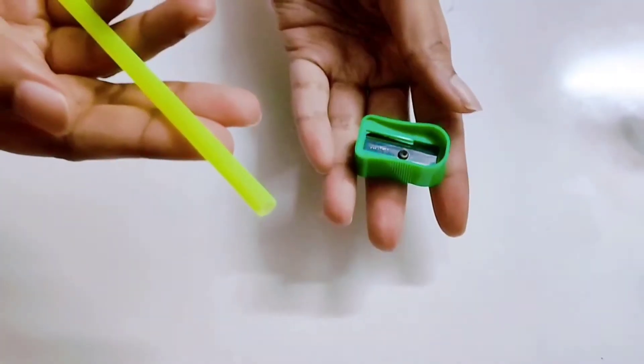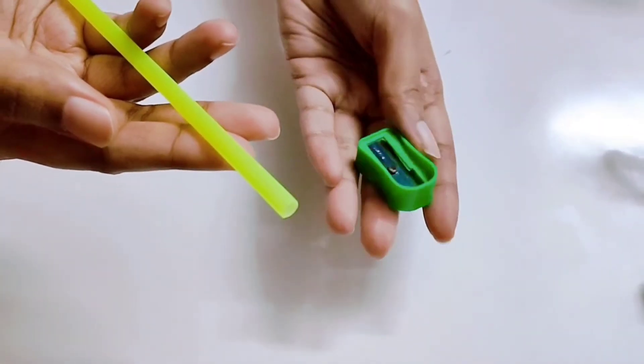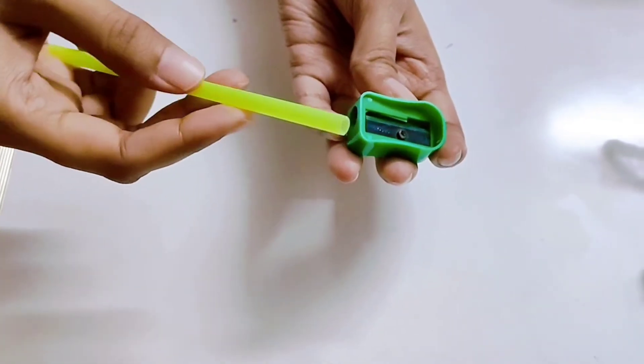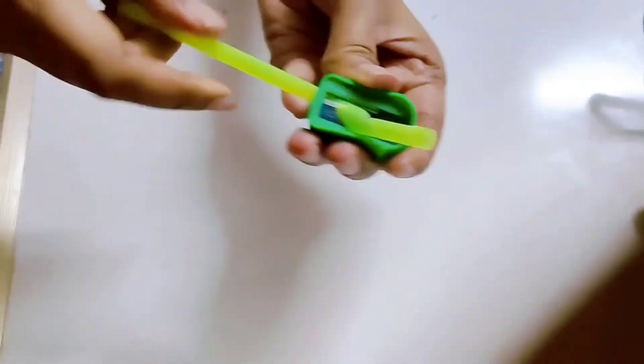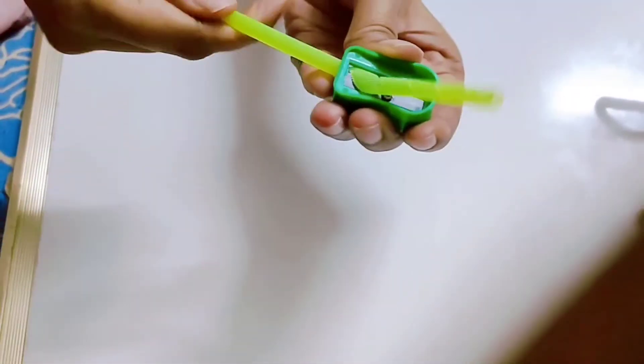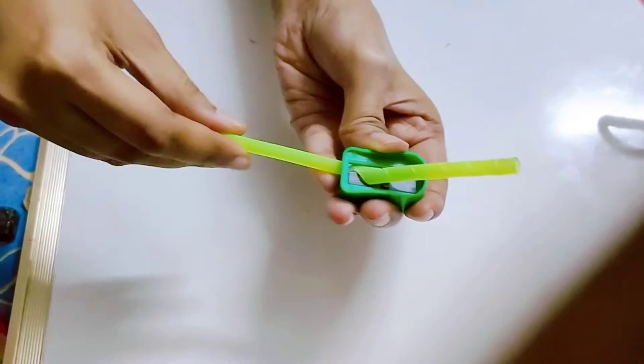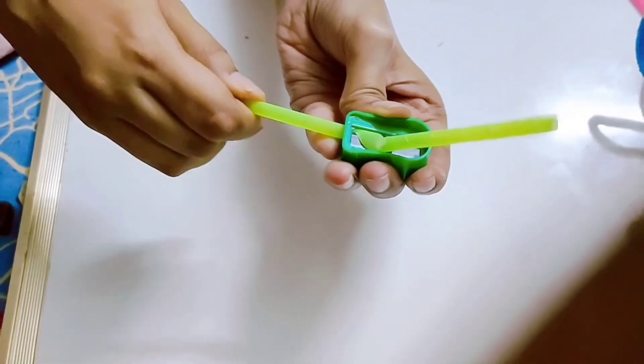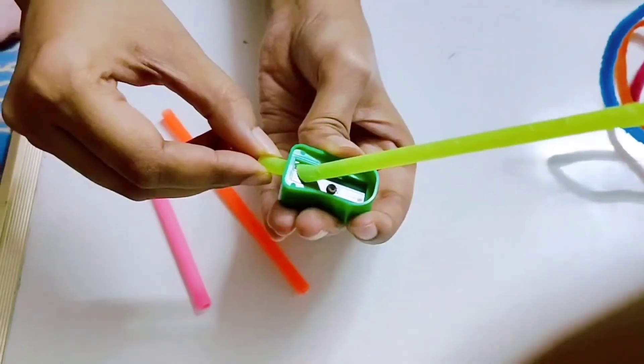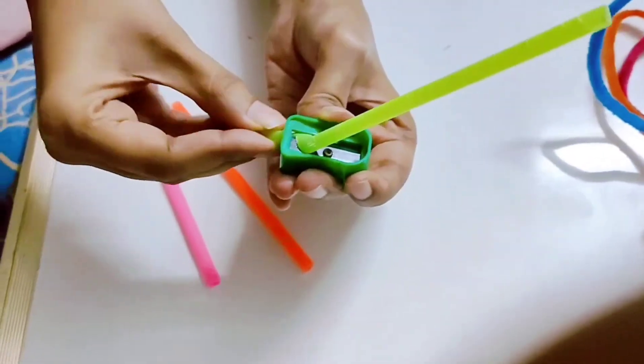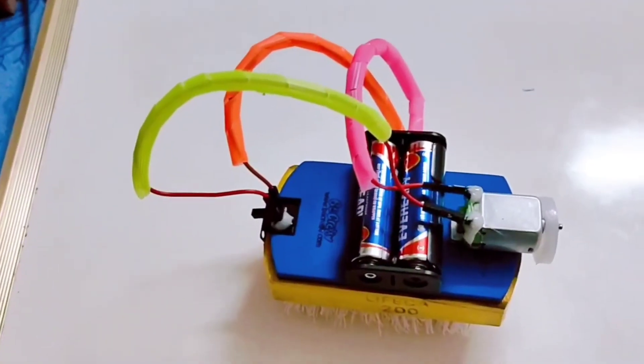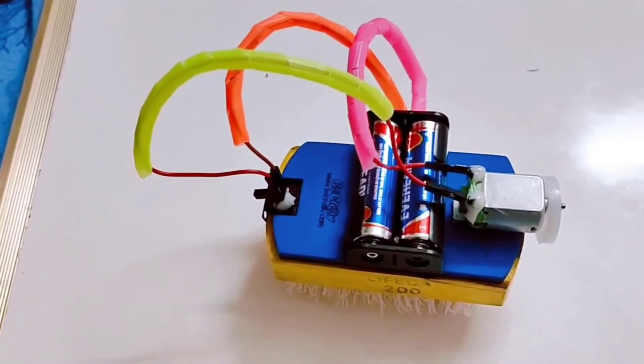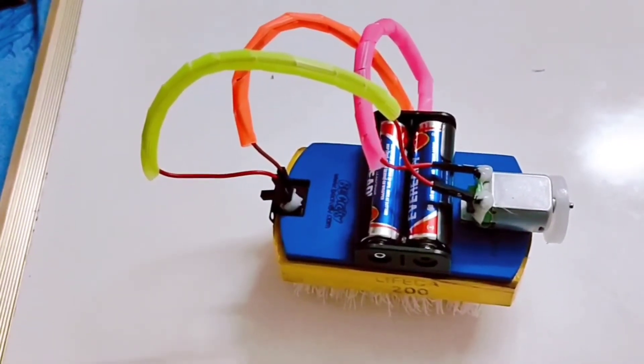So guys, first I'm gonna try it with the lime straw and the sharpener. So let's go. So guys, we have to do the same for the remaining two also. So guys, you can use the straw to cover the wires like this.